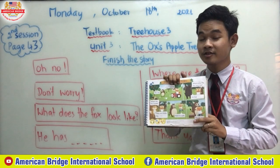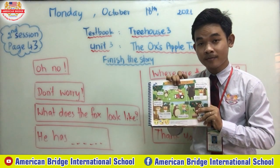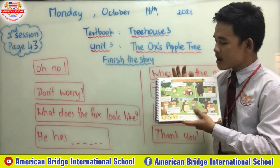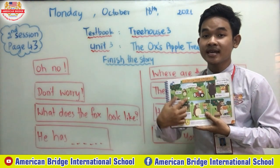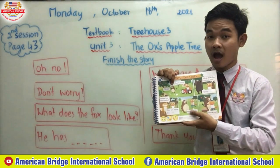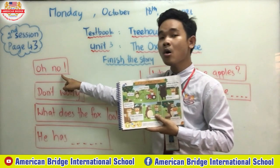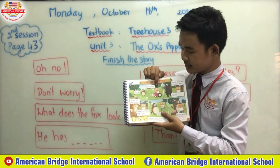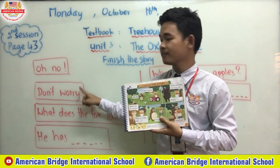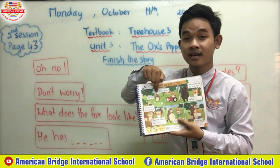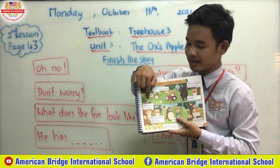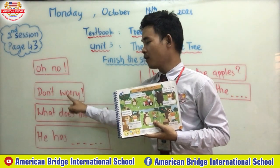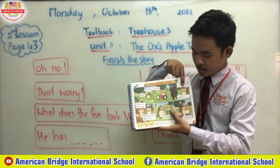After you listened to the track, did you add the two stickers everyone? Now let's add them with teacher if you haven't yet. Look at the first picture — the beginning of the story. The ox said 'Oh no!' because he saw someone cut down the apple tree. And Monty said 'Don't worry.'